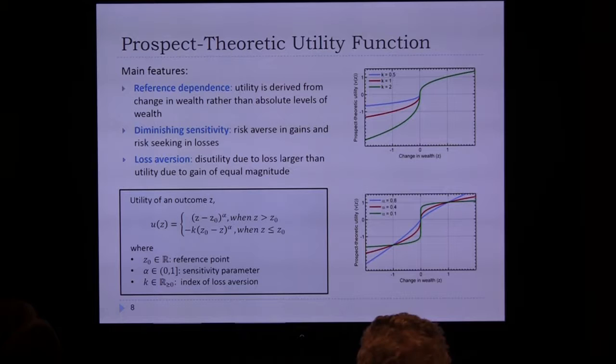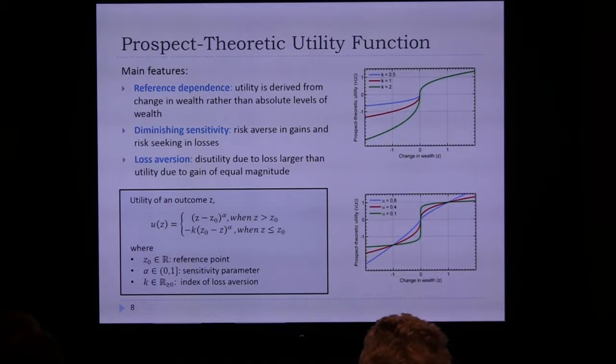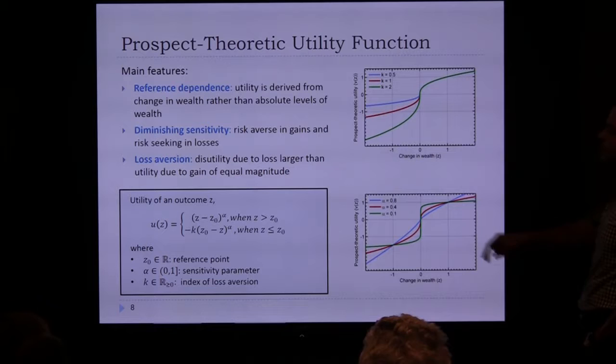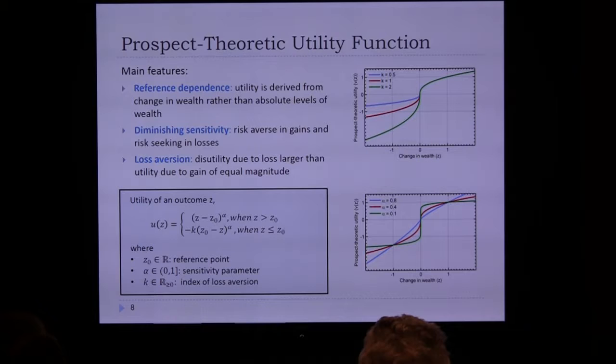Prospect theory captures such deviations from classical models and has several main features. First, people don't view outcomes in absolute terms — they compare things to a reference point (their current state) and behave differently in gain versus loss scenarios. Second, there is diminishing sensitivity: the difference between $0 and $1,000 feels large, but between $1,000,000 and $1,001,000 it feels negligible. This produces an S-shaped curve capturing diminishing sensitivity to larger gains and losses.